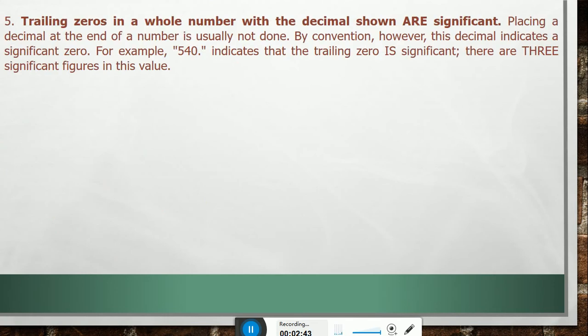Rule 5: Trailing zeros in a whole number with the decimal shown are significant. This can be clear from this example. Placing a decimal at the end of a number is usually not done. By convention, however, this decimal indicates a significant zero. For example, 500.